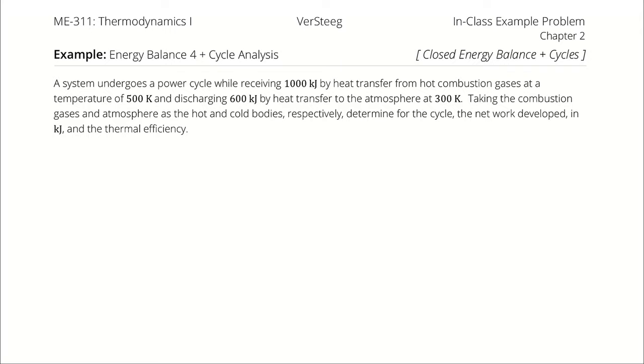A system undergoes a power cycle while receiving 1,000 kJ by heat transfer from hot combustion gases at a temperature of 500 K and discharging 600 kJ by heat transfer to the atmosphere at 300 K. Taking the combustion gases and atmosphere as the hot and cold bodies respectively, determine for the cycle the network developed in kJ and the thermal efficiency.